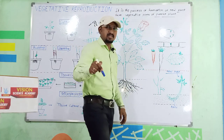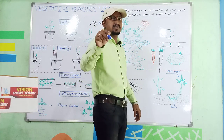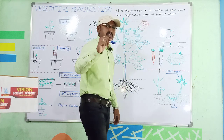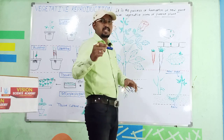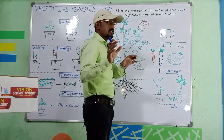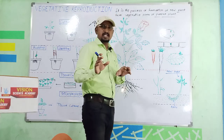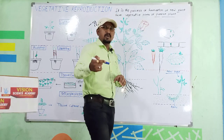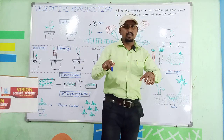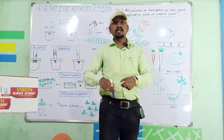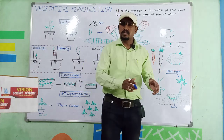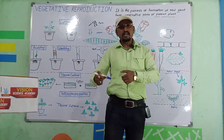Vegetative propagation is a mode of reproduction in which plants get reproduced through their vegetative parts like root, stem, and leaves.